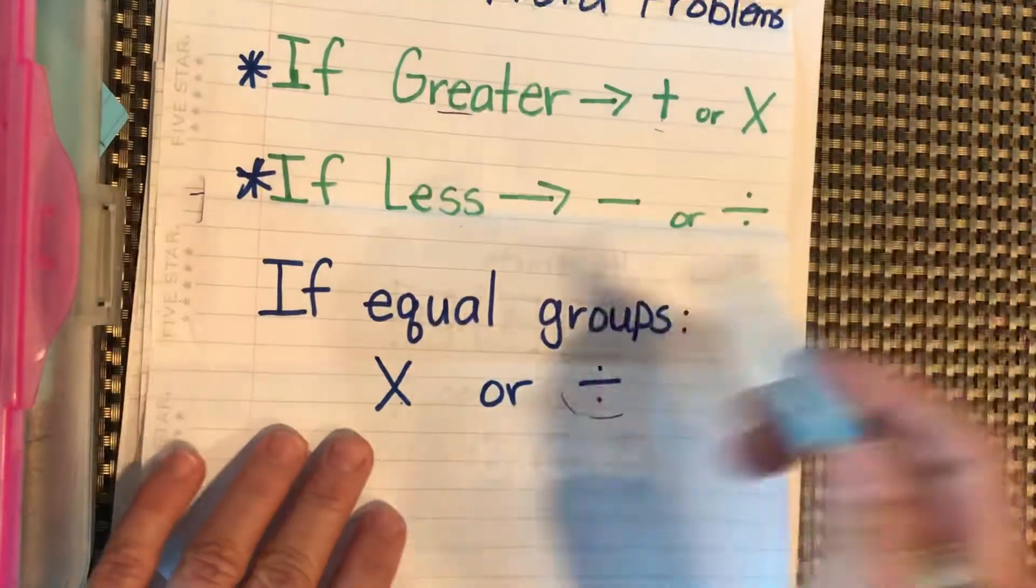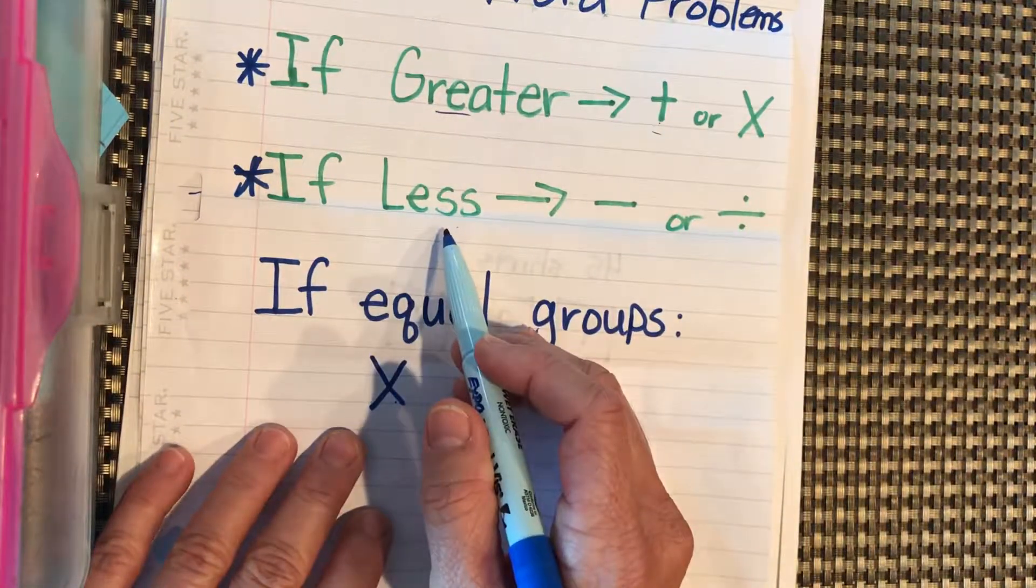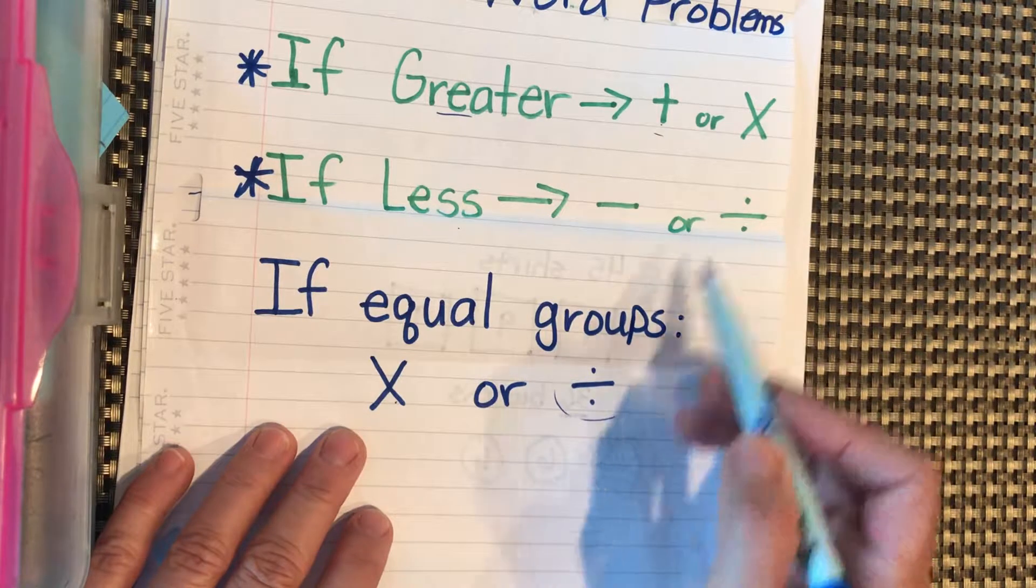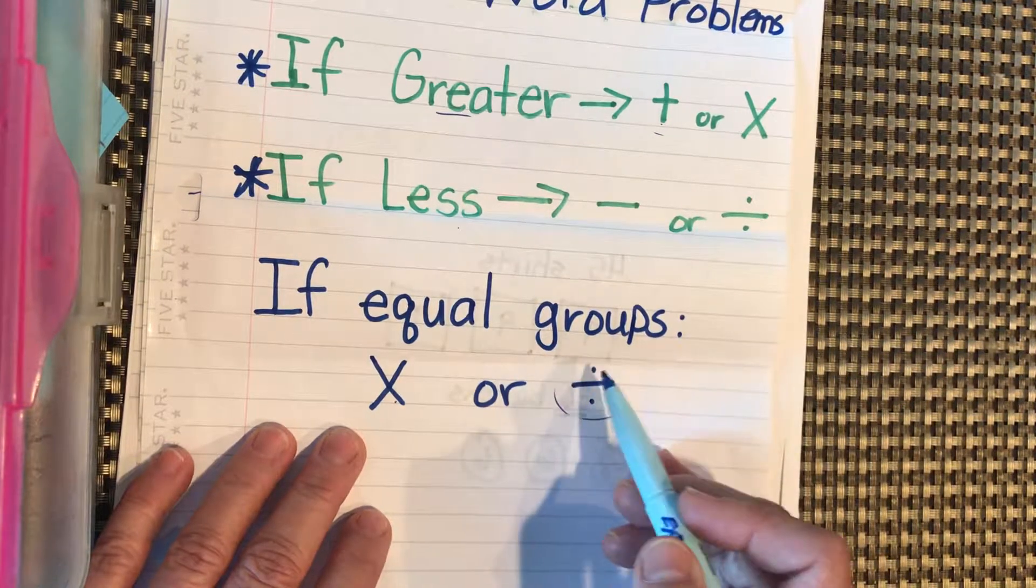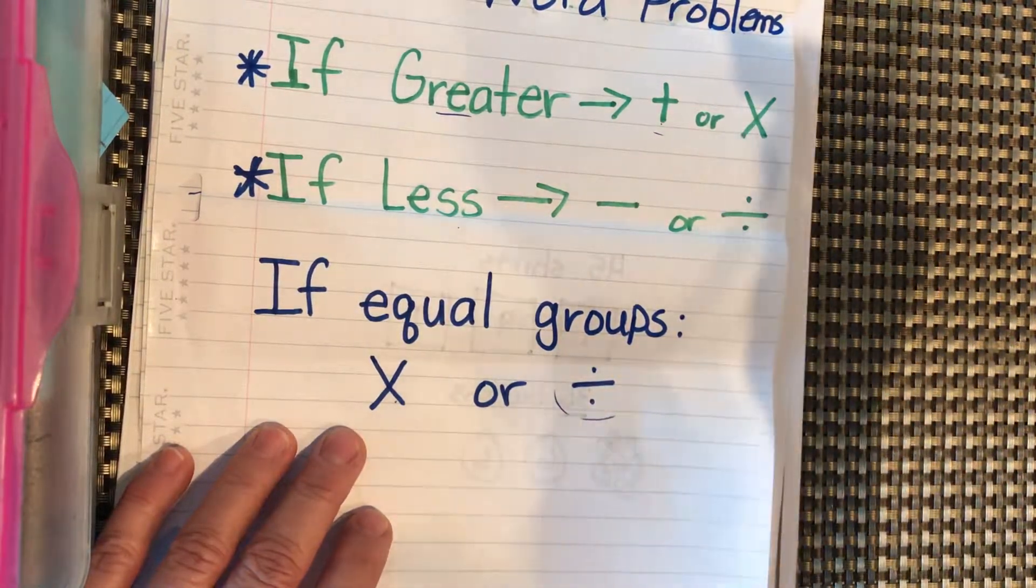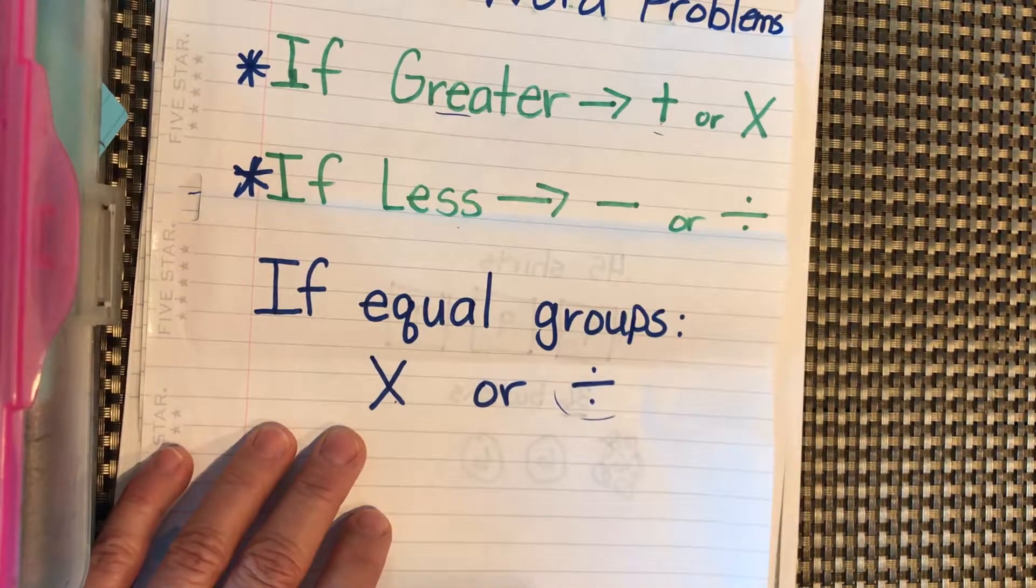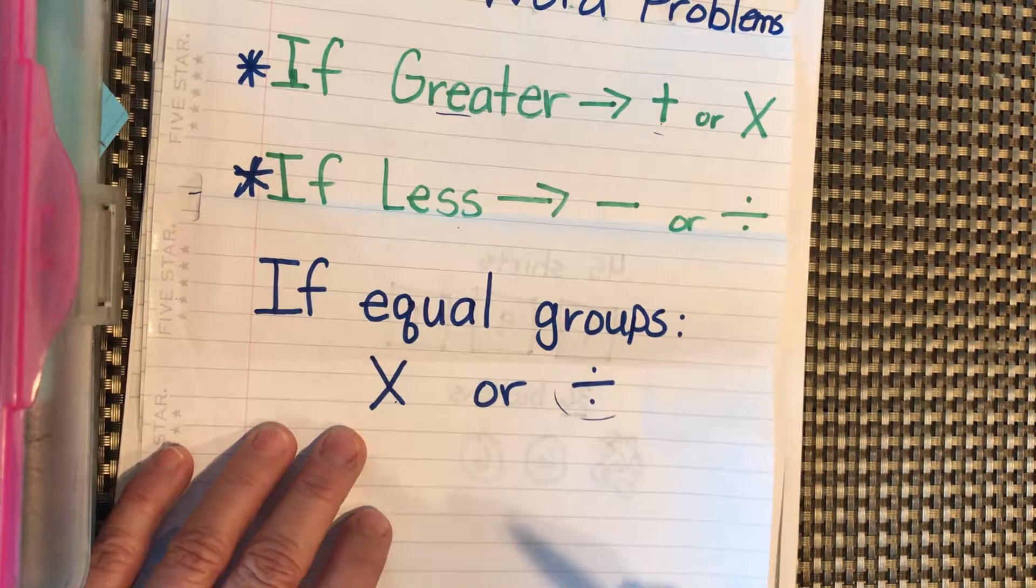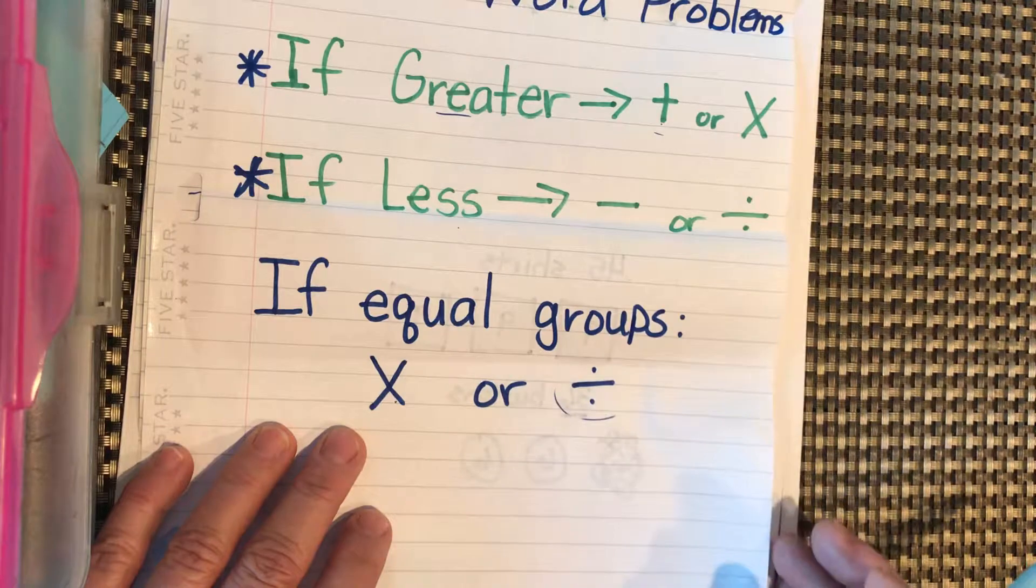Remember, the answer needs to be less, and it needs to involve equal groups. So we're looking for what we have left over at the end is less, or the number in each box is less, but then we definitely need to have equal groups in order to divide.